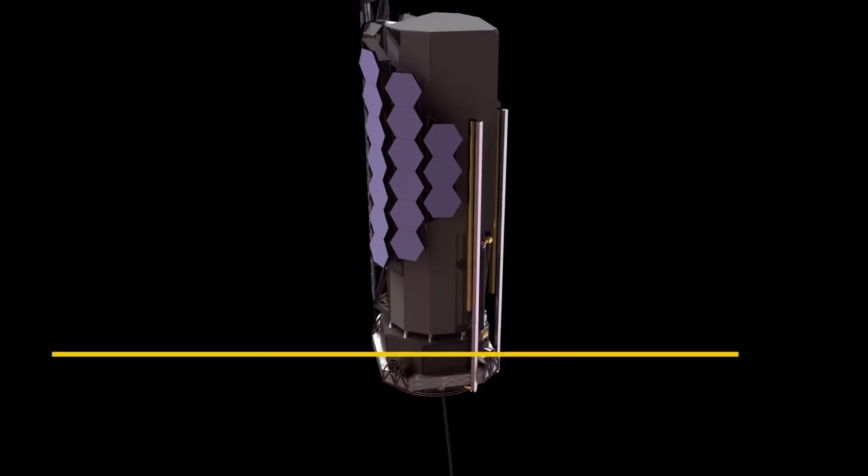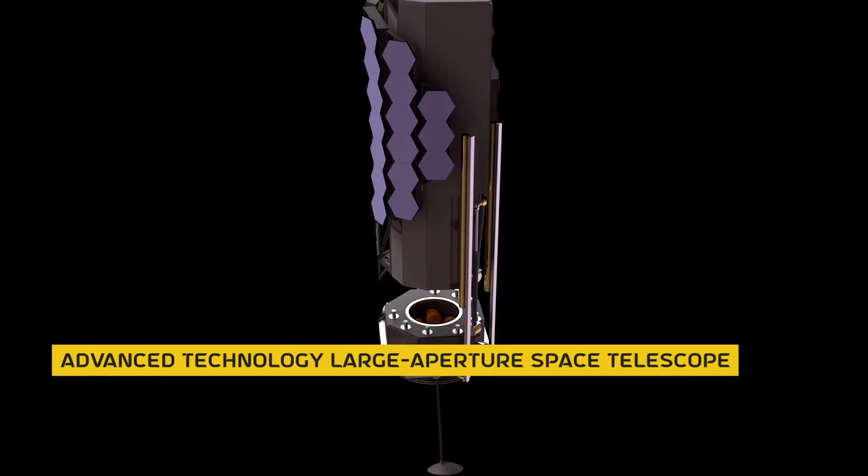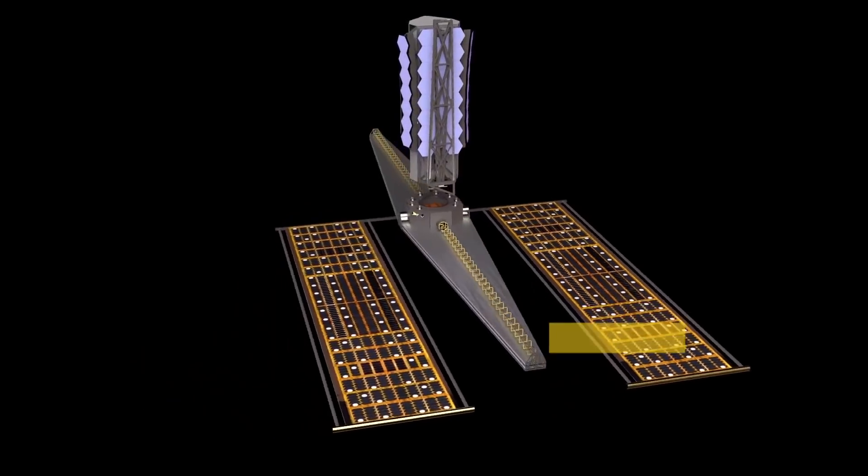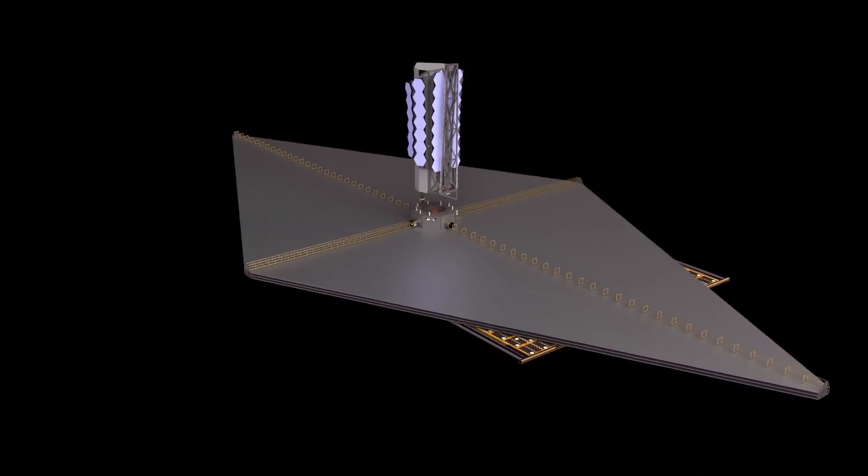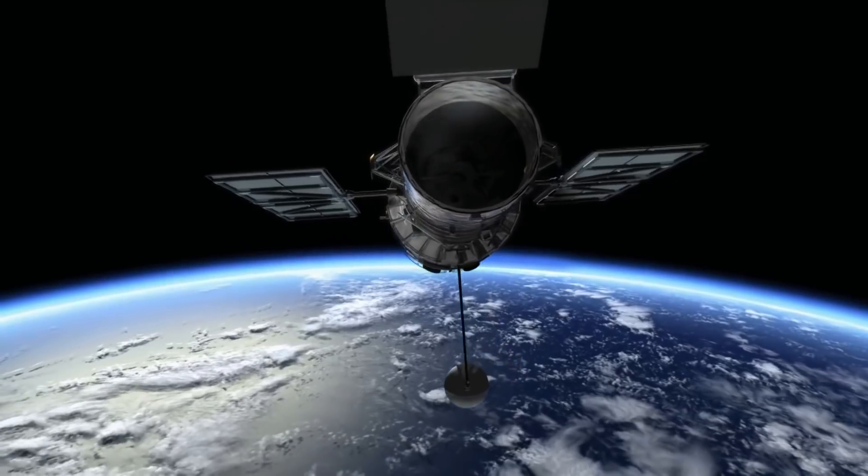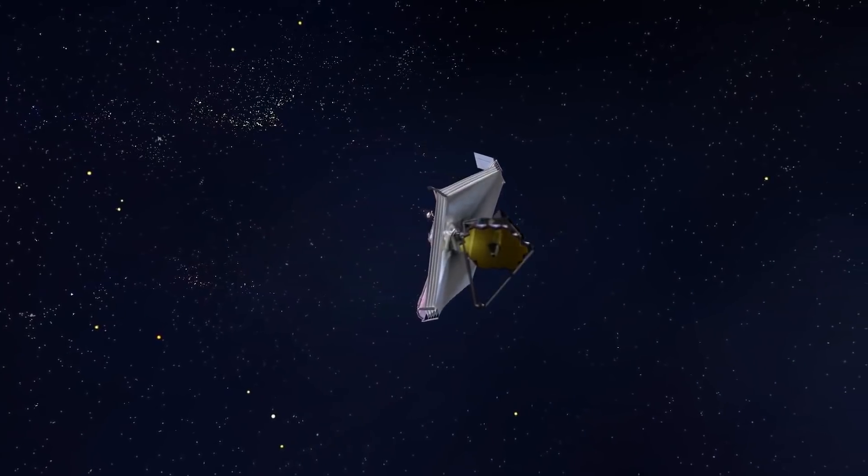On the other hand, LUVOIR-B, previously known as the Advanced Technology Large Aperture Space Telescope, at last is an 8-meter wide telescope initially developed by the Space Telescope Science Institute, the Science Operations Center for the Hubble Space Telescope and the James Webb Space Telescope.